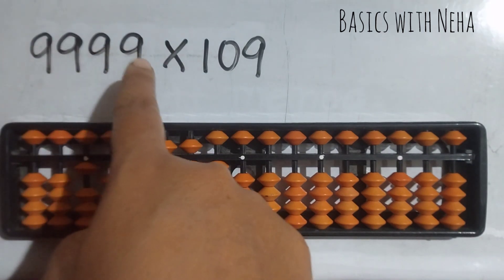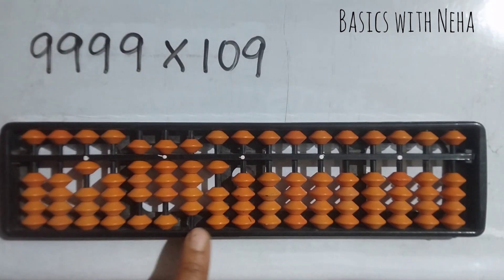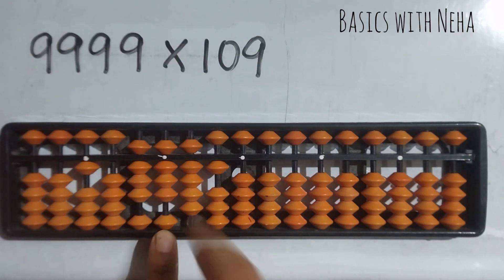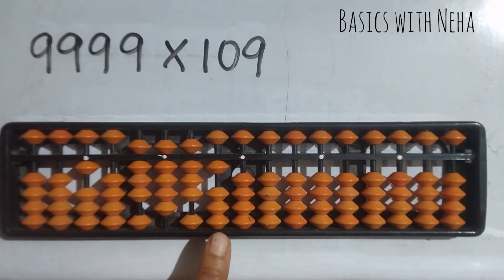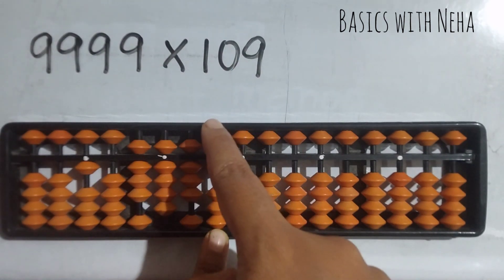Now again, we are done with three nines. We are left with one nine. Now we have a total of four numbers, so start from here. Nine ones are nine again, so it will be zero nine. To place nine, it is plus ten minus one. Nine zeros are zero, it will be zero zero. Nine nines are 81, so we will place eight and one.